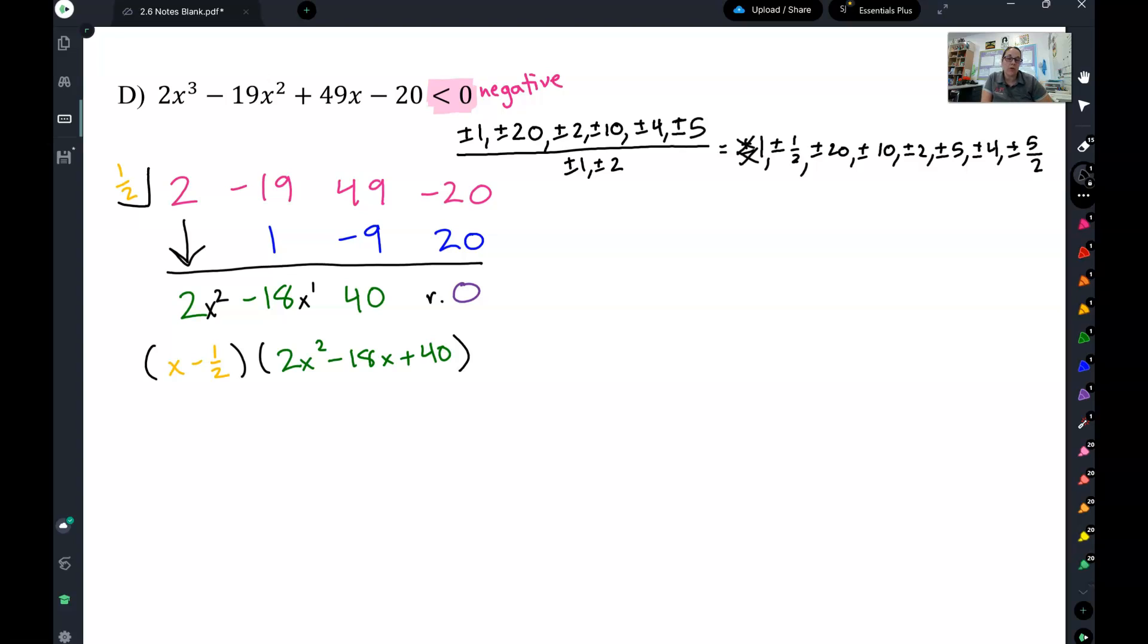So this is now a quadratic, meaning I can factor this. So first thing I notice in my factoring is that everything has a 2 in common. So I'm going to go ahead and take that 2 out, x squared minus 9x plus 20. And just a little tidbit reminder that you can actually put this 2 back into this one to make it 2x minus 1. You don't have to put that 2 back into that one. It just makes it look prettier and you don't have any fractions anymore.